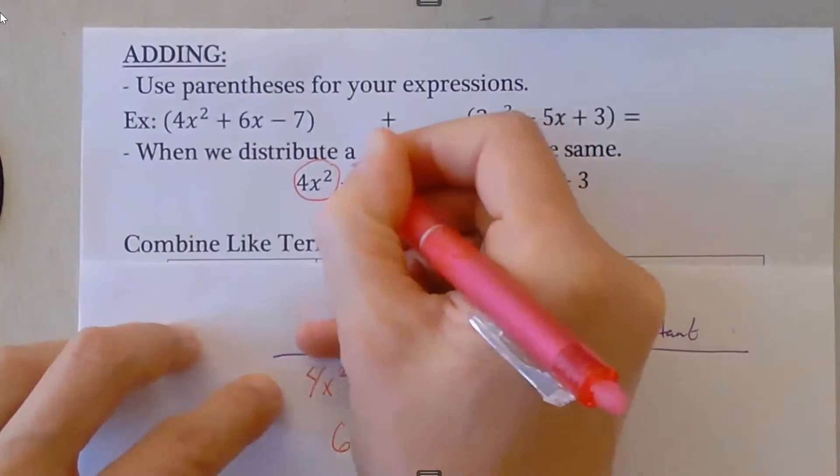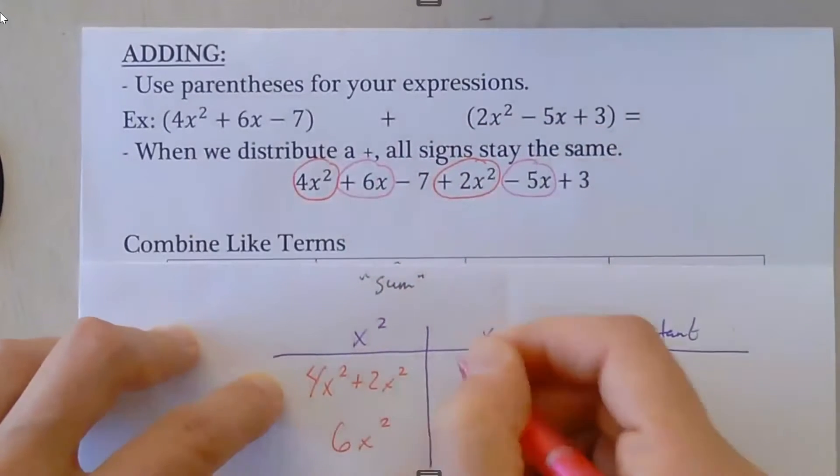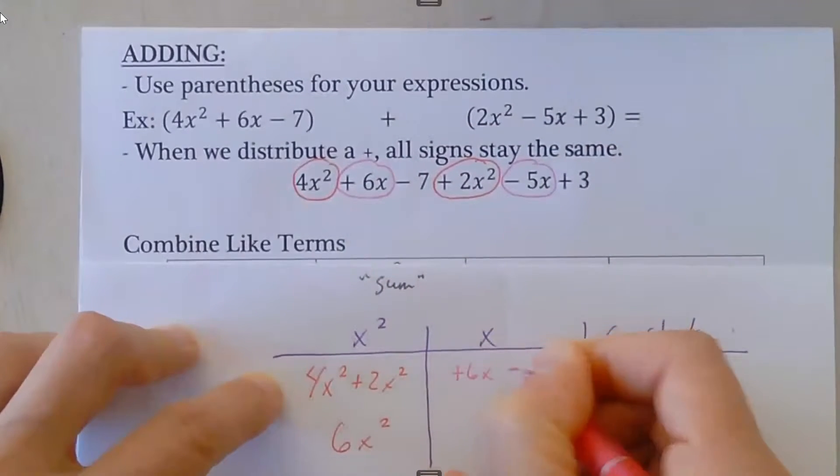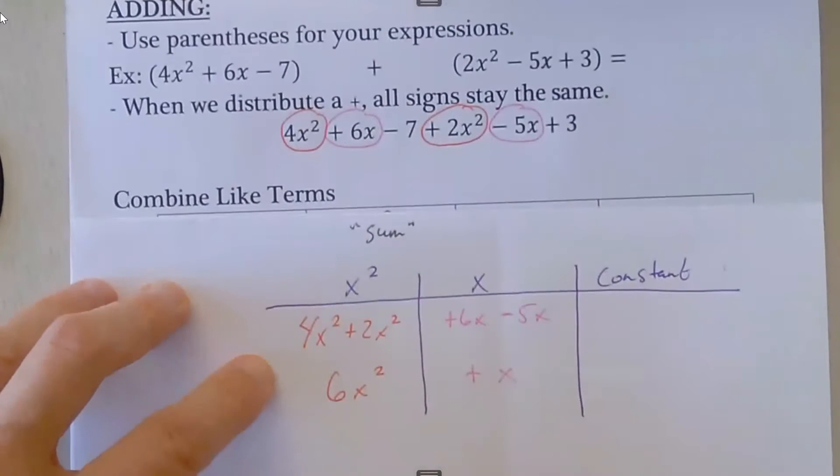Our x terms we have plus 6x and minus 5x. 6 minus 5 is 1, so this is plus 1x. You don't have to write the 1, you can, but you don't have to.